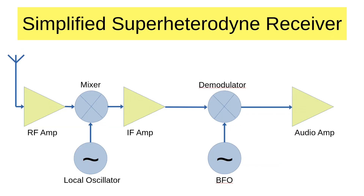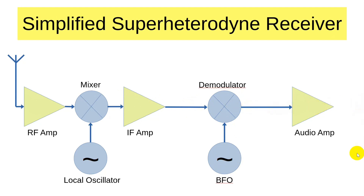Let's look at a simplified block diagram of a superhet receiver. We have an antenna going into an RF amp, a mixer with a local oscillator. The output frequency of that is the input to the IF amp — and there are often several IF amps. That string goes into a demodulator. Assuming we're doing single sideband, we need a beat frequency oscillator, which beats with the incoming signal. Out of there comes audio going into an audio amp and out to your ear. So we have RF, IF, and audio.